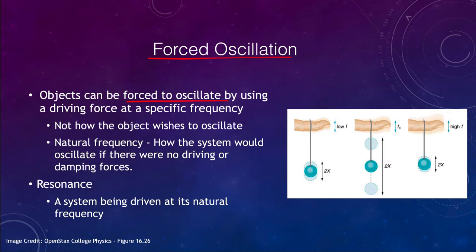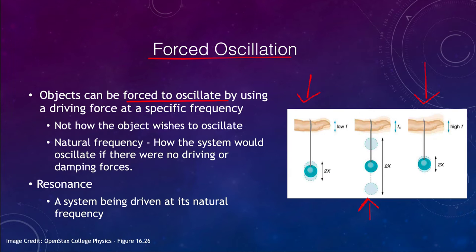An object will have a natural frequency — if there were no forces opposing it, no damping forces, there is a natural frequency at which the object wants to oscillate. If you drive it at a frequency that is too low, you won't get very large oscillations. If you move your finger too quickly, you will also get a very low displacement. But if you hit the natural frequency just right, then you will get very large oscillations.